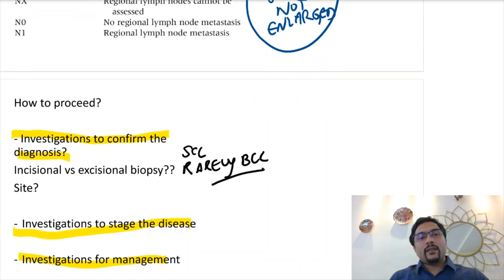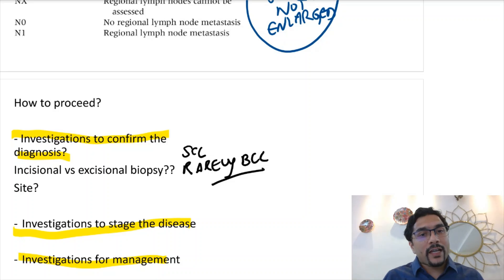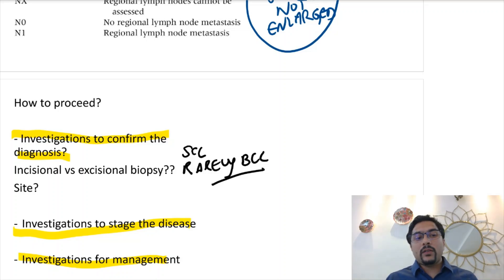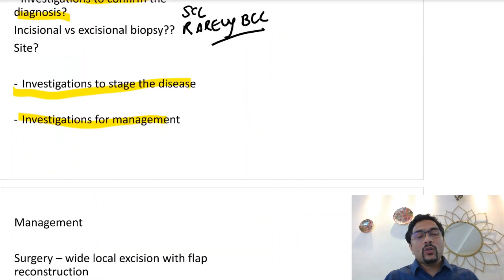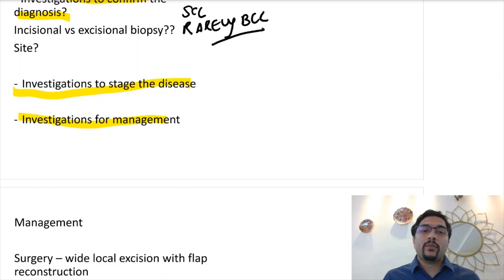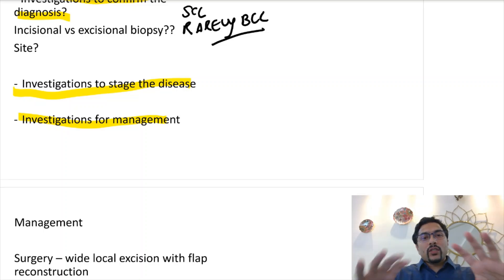To stage the disease, do an ultrasound of the inguinal region to look for lymph nodes. If lymph nodes are enlarged, do an FNAC, although enlargement could also be due to reactive lymphadenopathy from infection or slough. Management involves surgery — a wide local excision to get negative margins — and because a large defect will remain, a flap will be needed to cover it. Chemotherapy and radiotherapy have a limited role in Marjolin's ulcer.